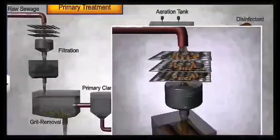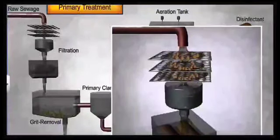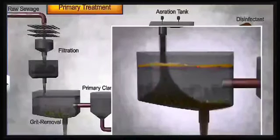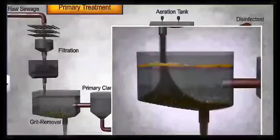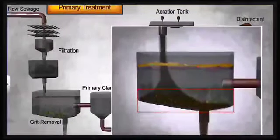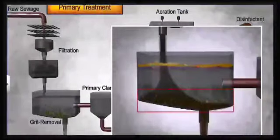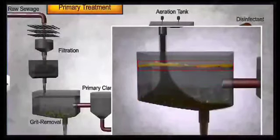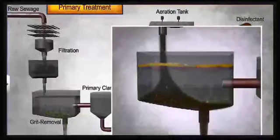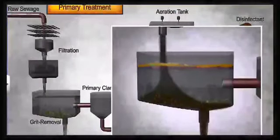The settled product is called primary sludge, whereas the leftover water is called primary effluent. So we get primary sludge which is settled and whatever is left is called primary effluent.